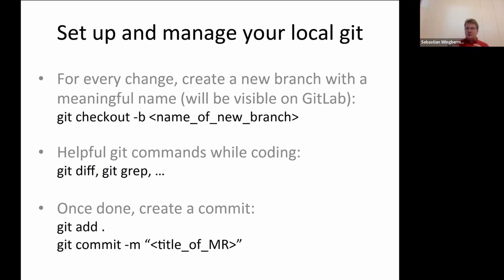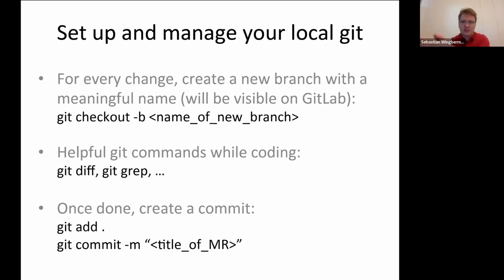Once you've made your changes, you need to tell Git you're serious about contributing them. The first step is 'git add', where you can specify particular files or use a dot wildcard to add everything you've been working on. This adds the changes to the so-called index level, telling Git you want to contribute them. Then use 'git commit' to package them into a small box of changes you can upload to the remote server. The 'git commit' command takes a '-m' or message flag where you put the title of your MR, which will also be visible on the official GitLab server.